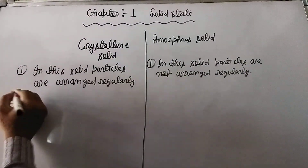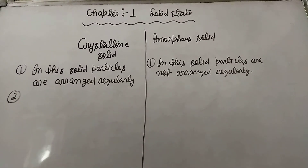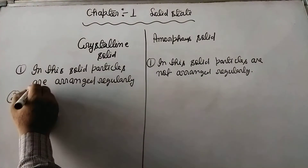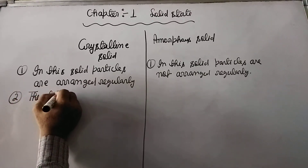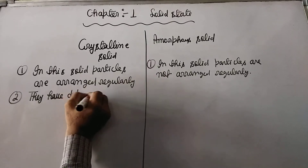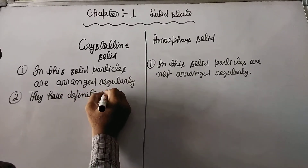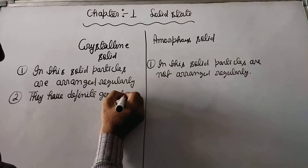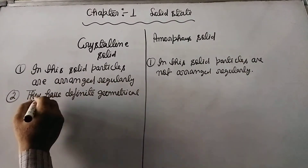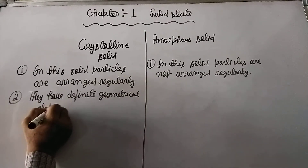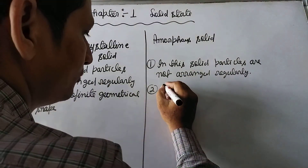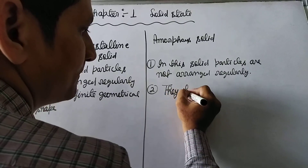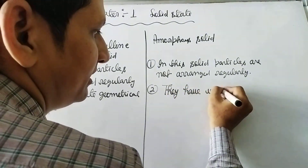Property 2: Crystalline solids have a definite geometrical shape. In amorphous solid, they have an irregular shape.